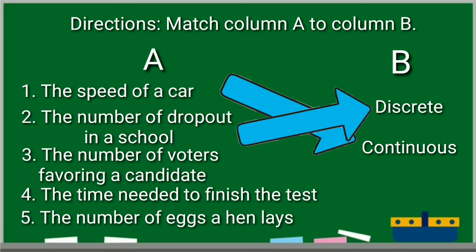Number three. The number of voters favoring a candidate. This can also be counted. The answer, discrete. Number four. The time needed to finish the test. It talks about time. The answer, continuous.